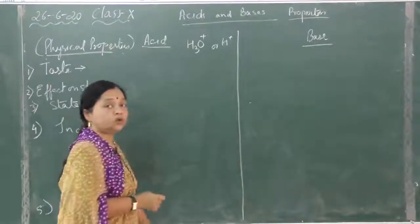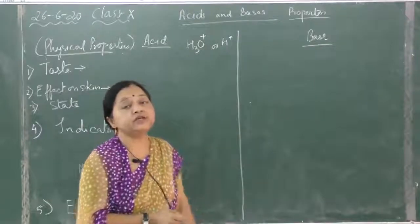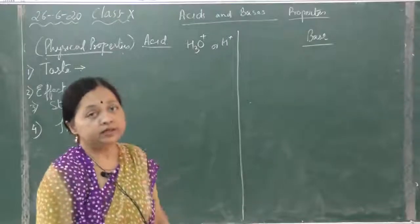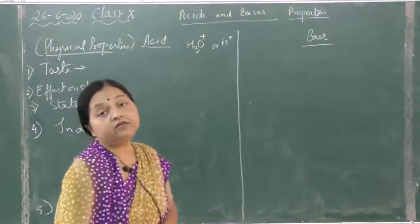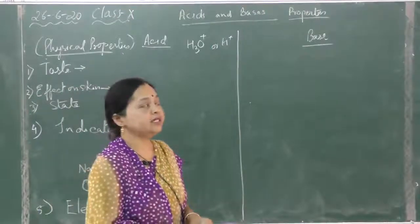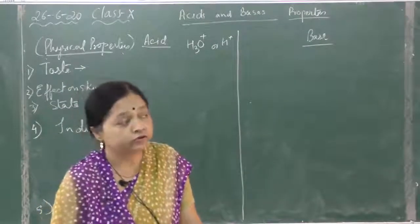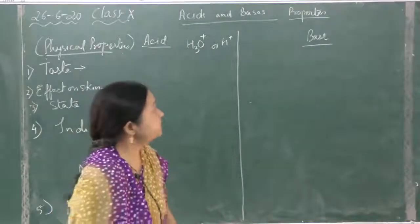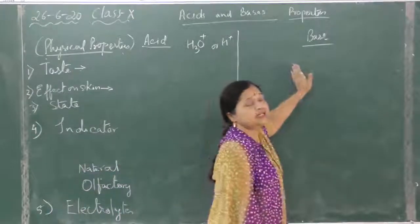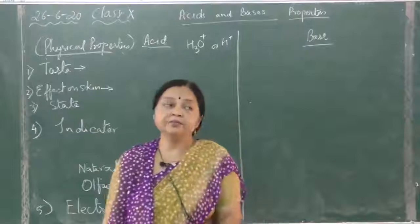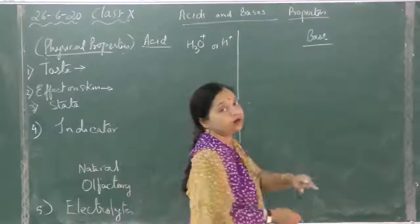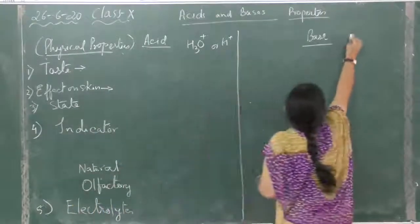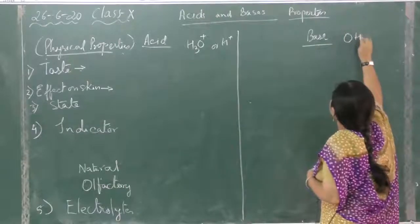And bases are those compounds which react with an acid to give salt and water as the only products. Here also the term 'only' is important, because if along with salt and water, for example, suppose some oxidizing agents like MnO2, PbO2, or Pb3O4, bleaching powder, KMnO4, these are also oxides of metal, but when they react with HCl they form salt, water, and chlorine. So because there is a third product formed along with salt and water, it is not classified as a base.